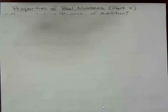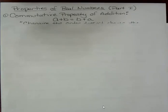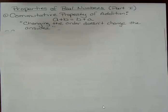The first property that's pretty commonly known is the commutative property of addition. In the commutative property of addition in symbols, we would say A plus B equals B plus A. In words, I could describe that property by saying changing the order doesn't change the answer.